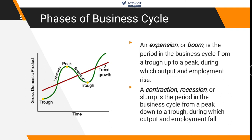We have four phases. We have a drop, which we can call recession, and we have expansion and a peak. Then we have again recession and a drop, and so on. This is the trend growth that the economy has. Expansion, or boom, is the period in the business cycle from a drop up to a peak during which output and employment rise. This is the time period when economic activity is at its peak and businesses are performing very well.